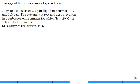So we have a system consisting of 2 kilograms of liquid mercury at 50 degrees C and 3 bar. You might want to put over here the temperature initially is 50, pressure 3 bar.